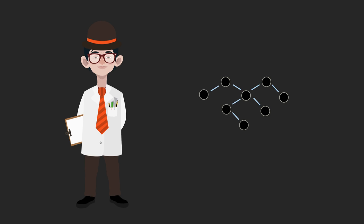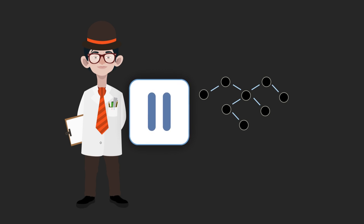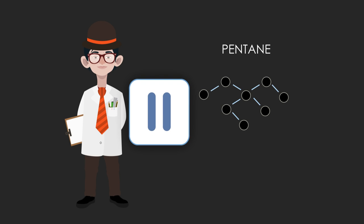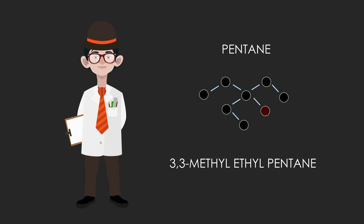But what is its formal name? Pause and count the atoms in the longest chain. Whichever way you count, the longest chain is five carbon atoms long, so the name will be pentane. Off the third atom in the chain, there is an ethyl group and also a methyl group, so its name will be 3-methyl-3-ethylpentane.